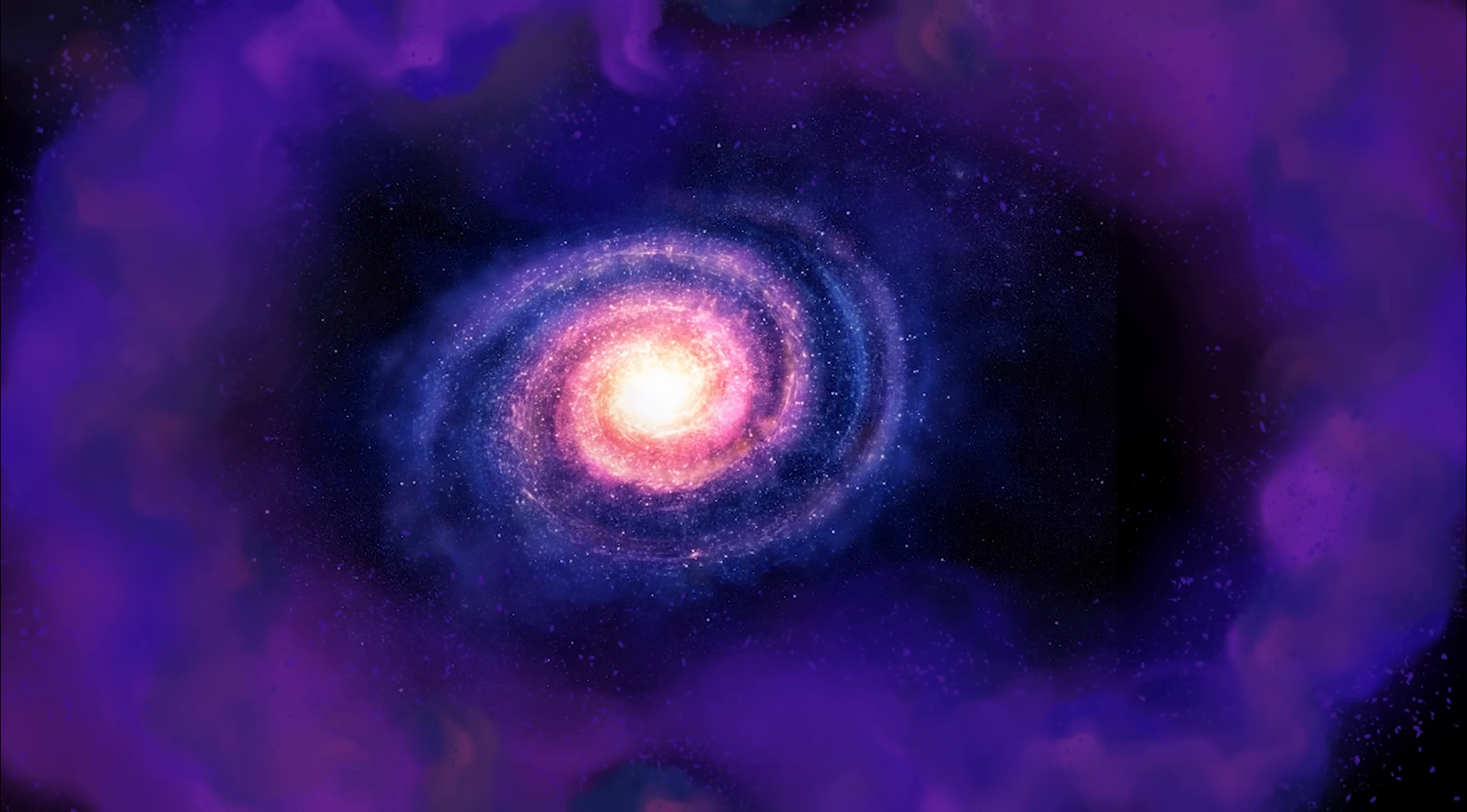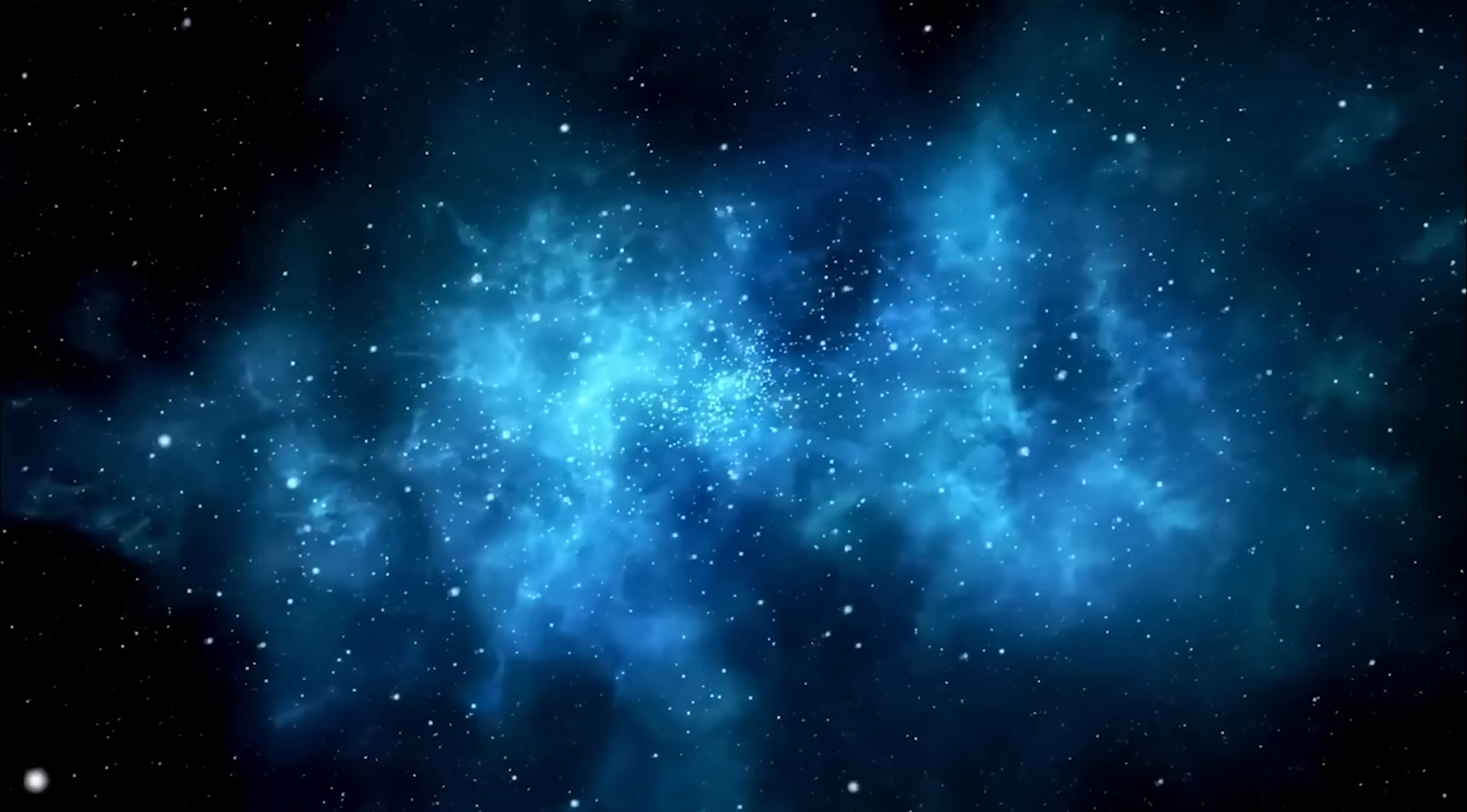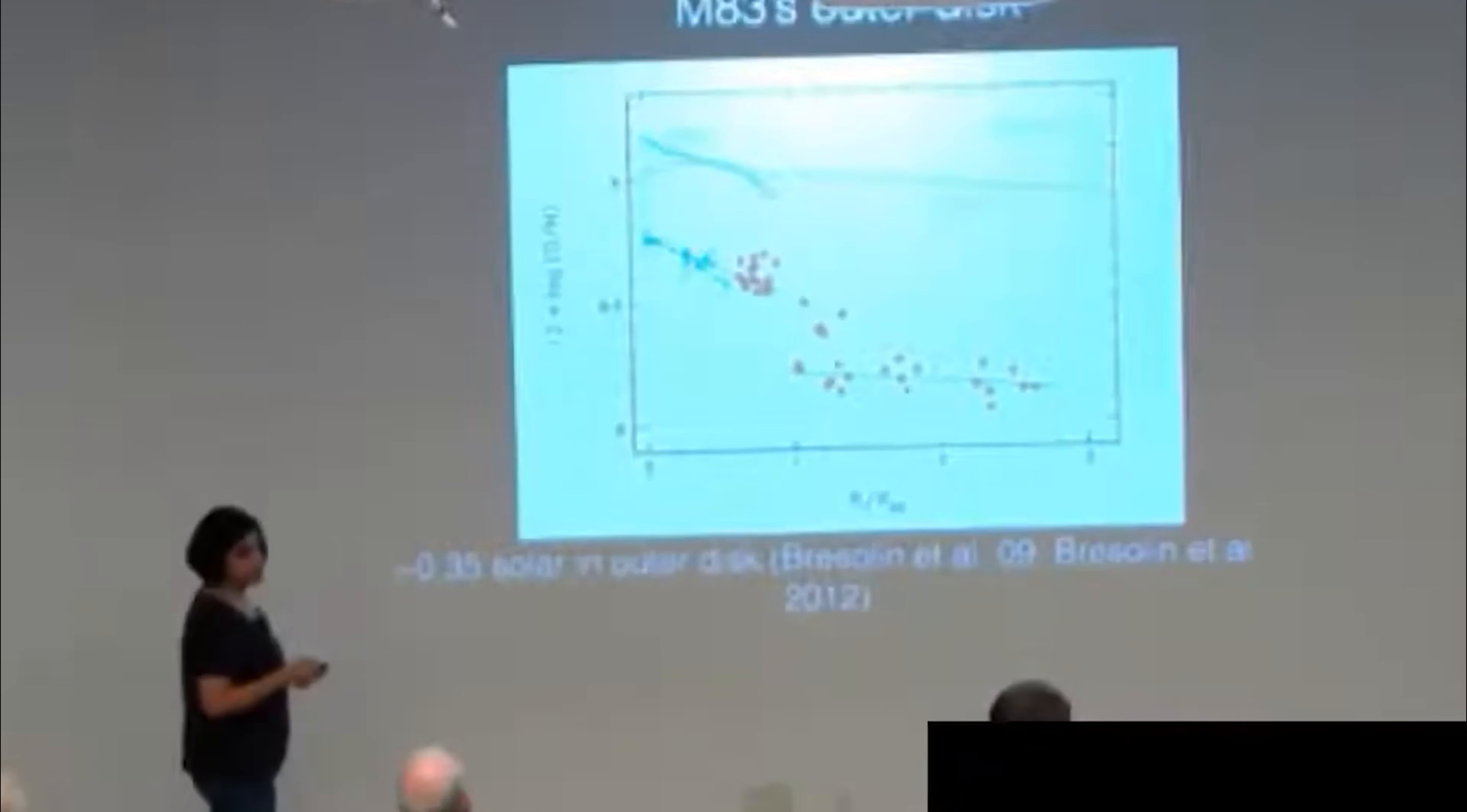But actually, spotting them has been another story entirely. They're invisible, relatively small, and can only be detected indirectly through their gravitational effects. Over the years, astronomers have seen tantalizing hints, but nothing solid. Chakrabarti's team, however, used a clever new approach that might finally have done the trick.